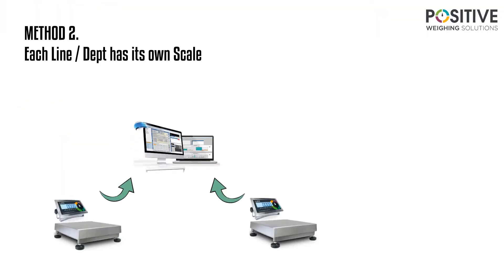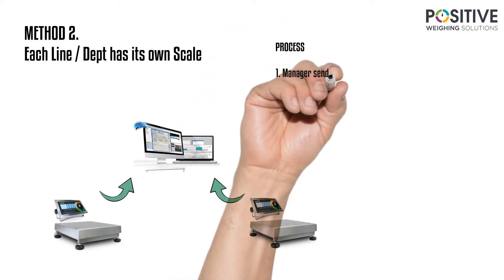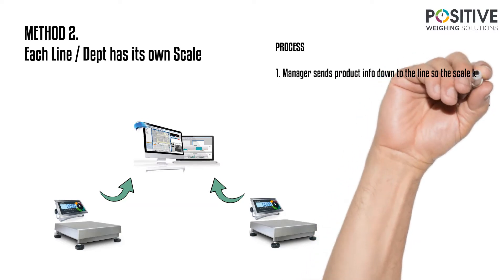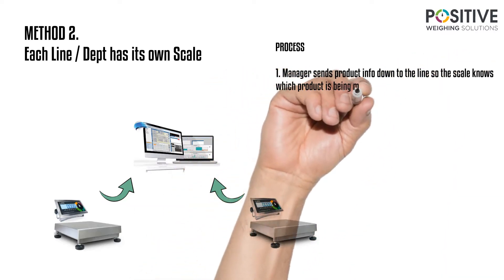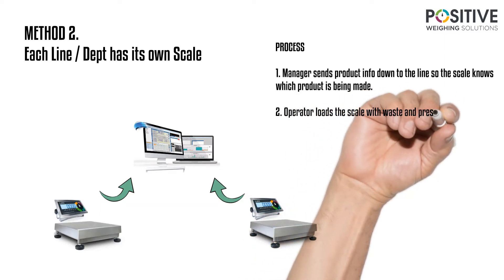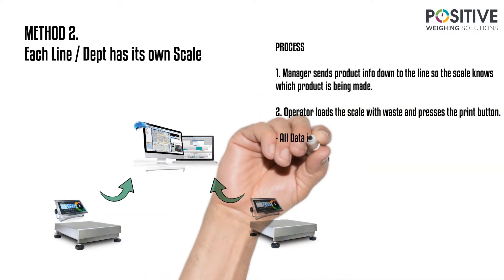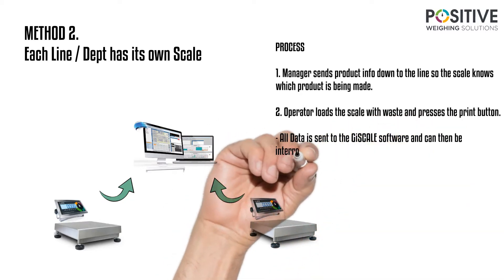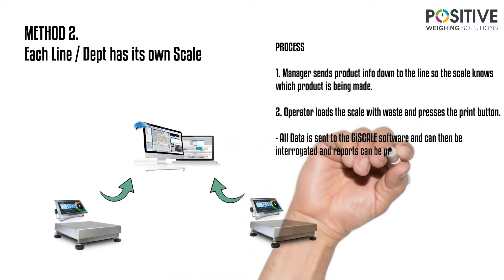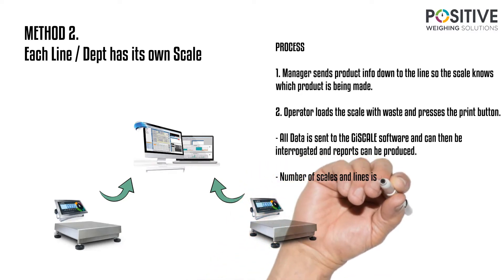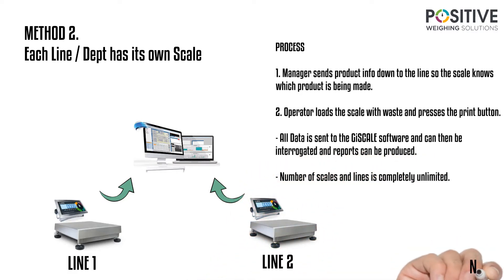Method two: each line has its own dedicated scale. Step one, the manager sends the product information down to the line so the scale knows which product is being made that day. Step two, the operator loads the scale with the waste and presses the print button. All data is now sent to the G-Scale software and can be interrogated and reports can be produced. The number of scales and lines is completely unlimited.